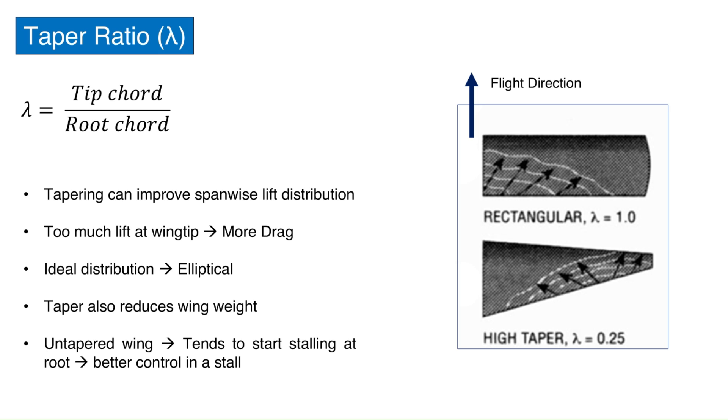It tends to stall starting at the root which makes the airplane more controllable in a stall. This is because the ailerons at the tips will still be in use giving the pilot maneuverability. Ideally, the taper ratio should be selected based on the drag, stalling pattern, weight, and complexity of manufacturing, which again shows a compromise between various factors in aircraft design.